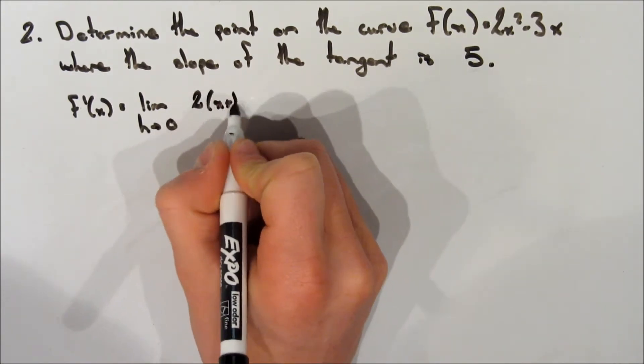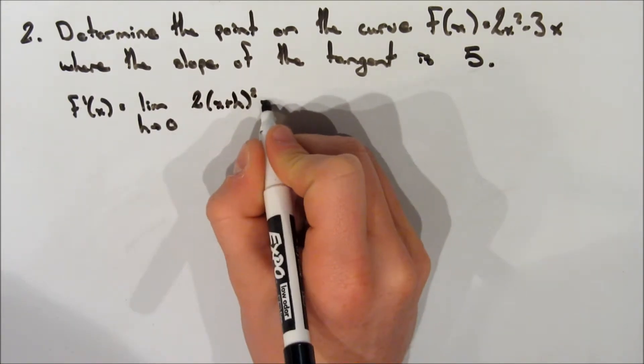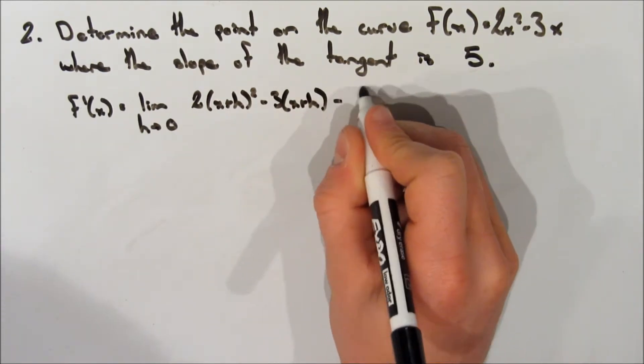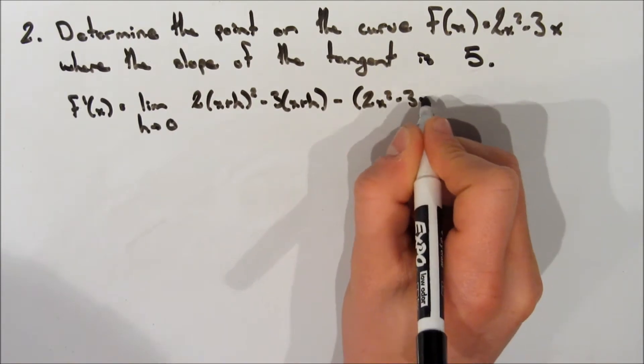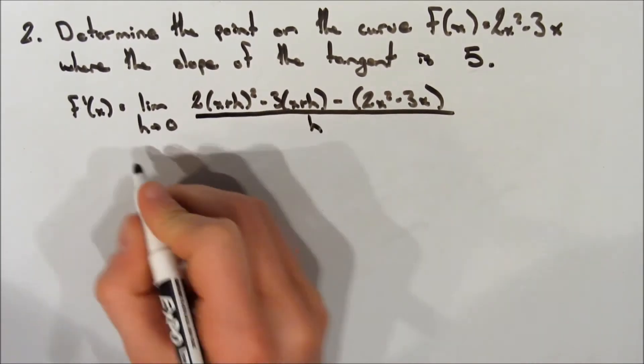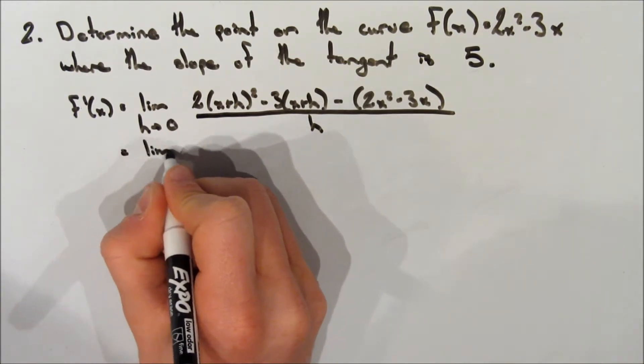So we're still using the definition of a derivative, the limit as h approaches 0, and we're going to go f of x plus h, so we're subbing in x plus h everywhere where there's an x, and we're going to subtract f of x, which is 2x squared minus 3x. And all of this is over h.